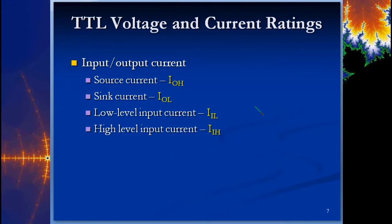Looking at a data sheet, you'll see current listed as output high and output low — what is the current when the chip outputs a high, and what is it when it outputs a low. The same applies to the inputs: low level input current and high level input current. You want to start reading through chapter 9, and you may have to read it a couple of times to let it sink in, because we're talking about highs and lows for both the input and the output.